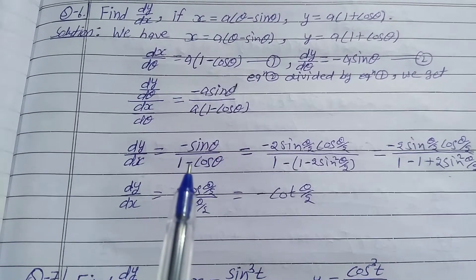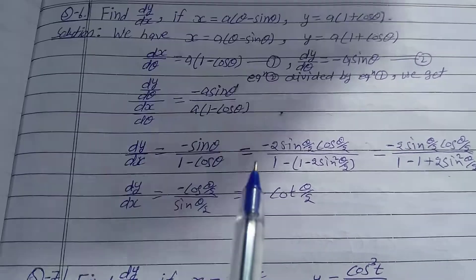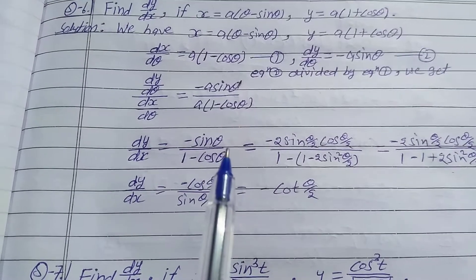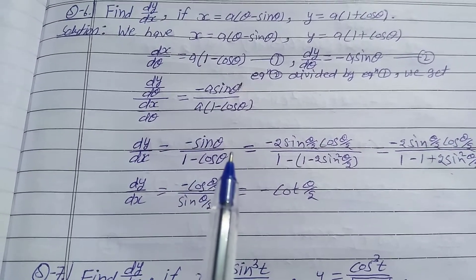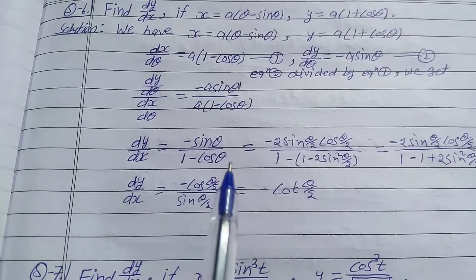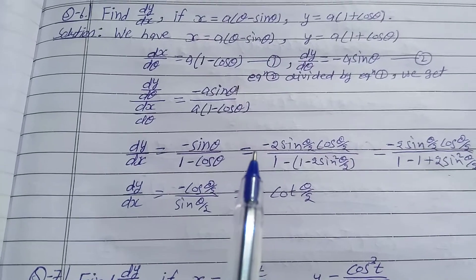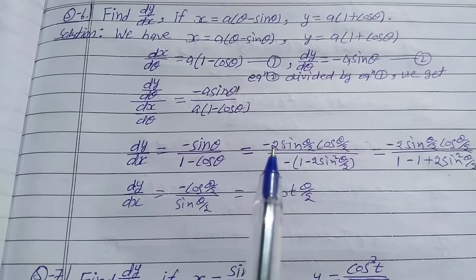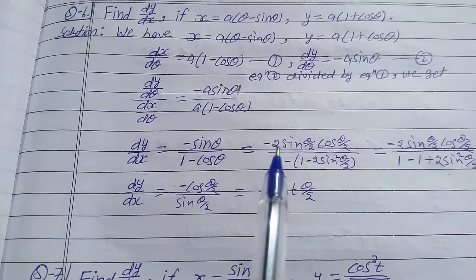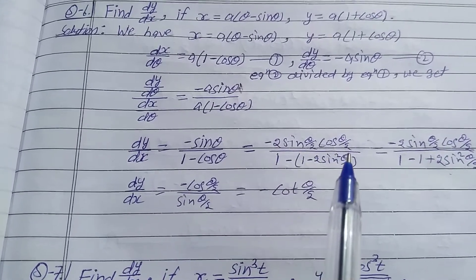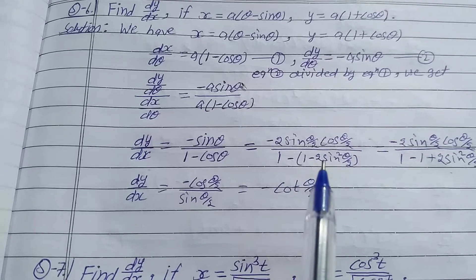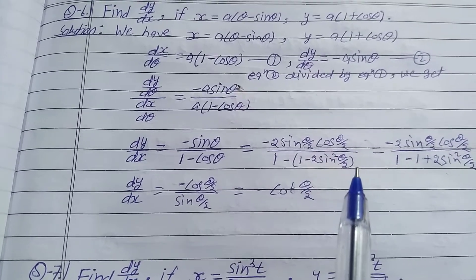Convert sinθ and cosθ into half-angle form. sinθ = 2 sin(θ/2) cos(θ/2), and 1 - cosθ = 2 sin²(θ/2). So dy/dx = -2 sin(θ/2) cos(θ/2) / (1 - (1 - 2 sin²(θ/2))).